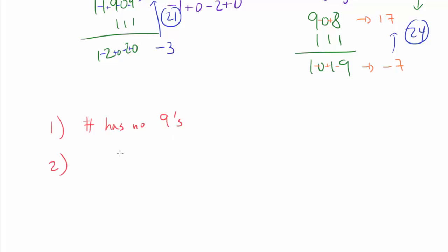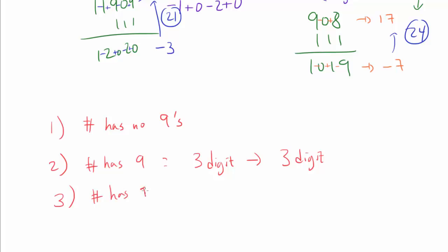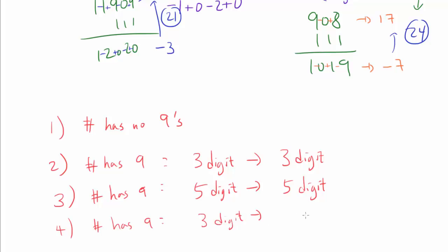Now I assert that 24 is the maximum possible value — that's as large as we can get. To prove this, albeit somewhat informally, we will look at some representative cases. The first is when a number has no 9s. The second is when the number has at least one 9 and we go from a 3-digit number to a 3-digit number after adding 111. We'll also look at when the number has a 9 and we go from a 5-digit to a 5-digit number. Finally, we'll consider the case where the number goes from a 3-digit number to a 4-digit number.